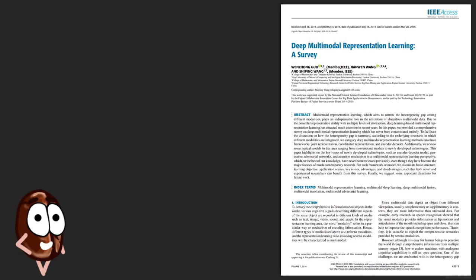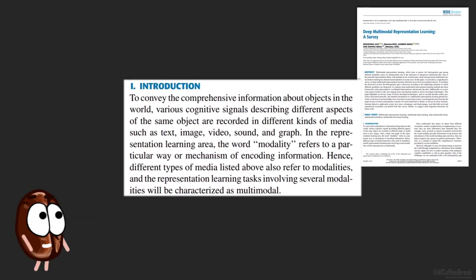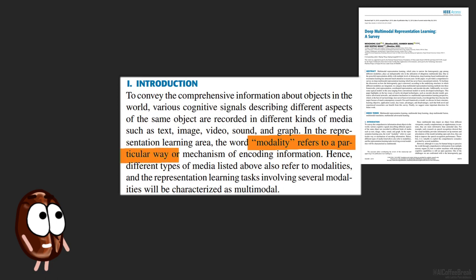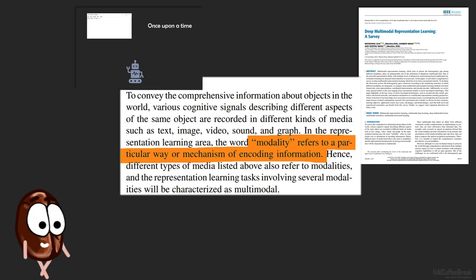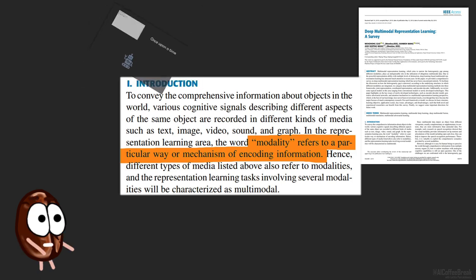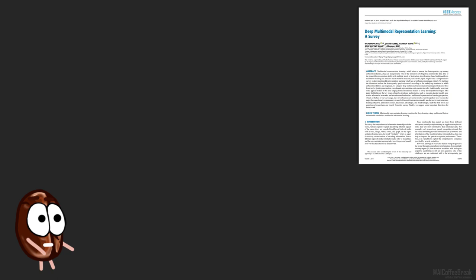So let's see another informed opinion. Modality refers to a particular way or mechanism of encoding information. After this definition, a text in a text file and a screenshot of that text are different ways to encode the same information, so there are different modalities. This might upset the human in us, but it makes sense for a machine that does not know that the text in the image represent the same thing.